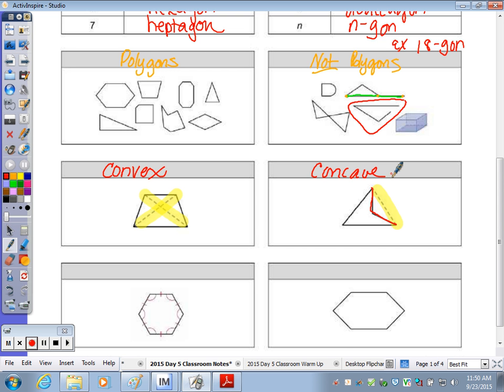Two vocab terms that may be new are regular polygons versus irregular. If it's regular, it means all angles are marked congruent. All angles congruent means equiangular.